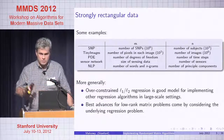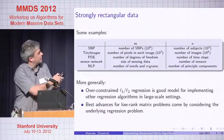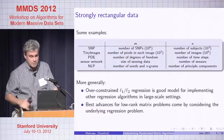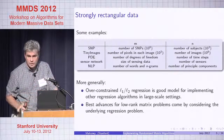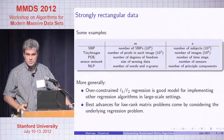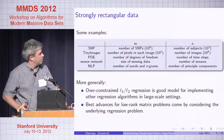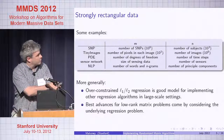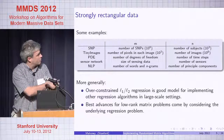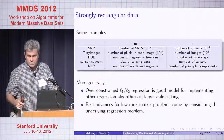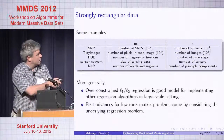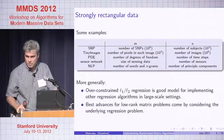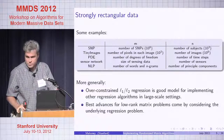Why very rectangular data? There are many such datasets — thousands of people by millions of SNPs, for example. Very over-constrained L1 and L2 regression are also very good models for implementing other vector-space analytic computations at very large scale.